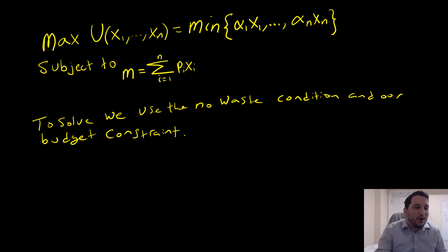Hey guys, what's up? Welcome to this video where we're going to be maximizing a utility function with Leontief preferences. This is the case of perfect complements with n goods, subject to a budget constraint.